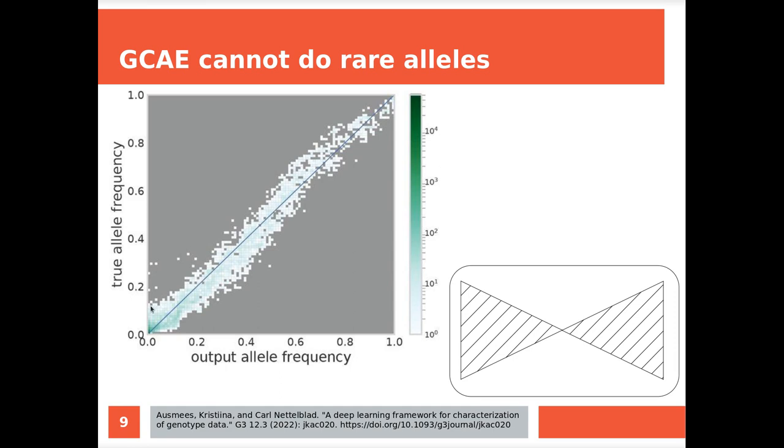But it's good enough, probably, because extracting the gist out of genotypes is hard enough as it is. This left column means that these are SNPs that have a true allele frequency from low to 0.8, and they are never reconstructed, they never reach the output layer again. So these are the victims of generalization. So we know GCAE cannot do rare alleles. Which is fine, like you want to do generalizations, not reconstruct everything.